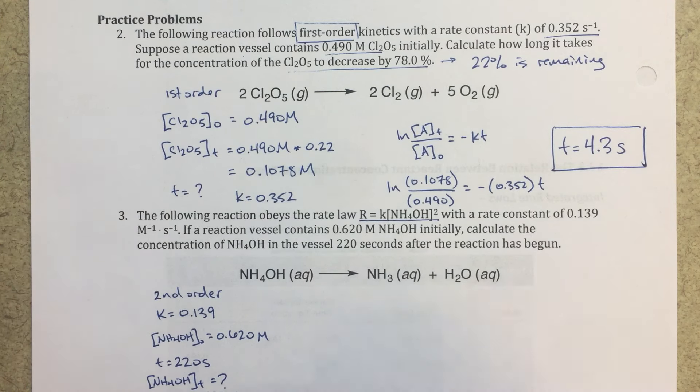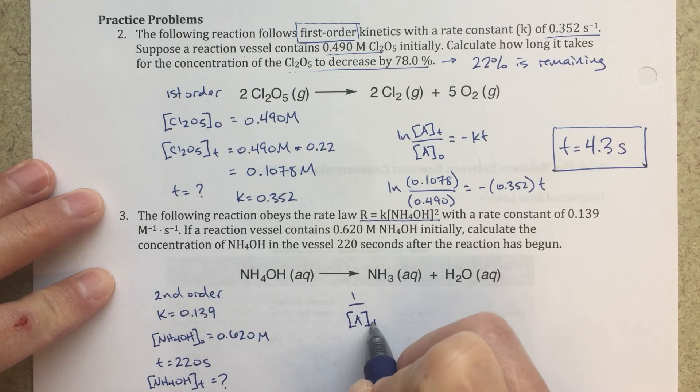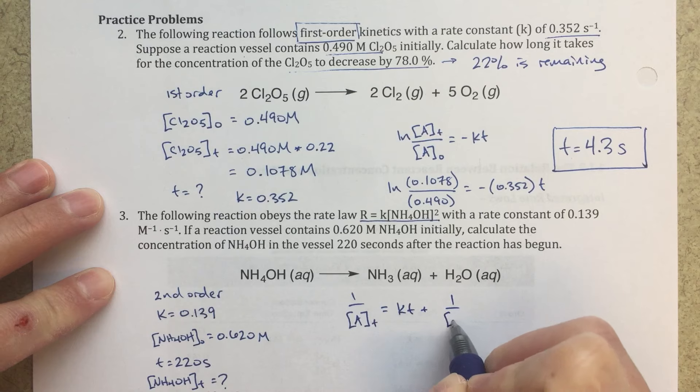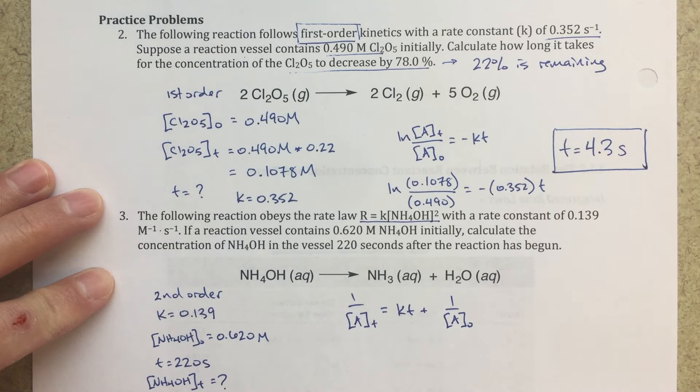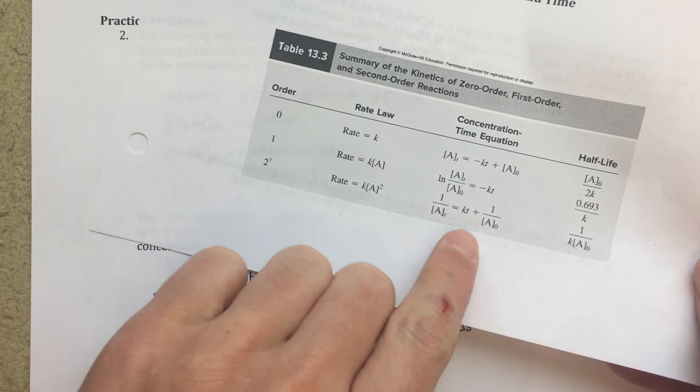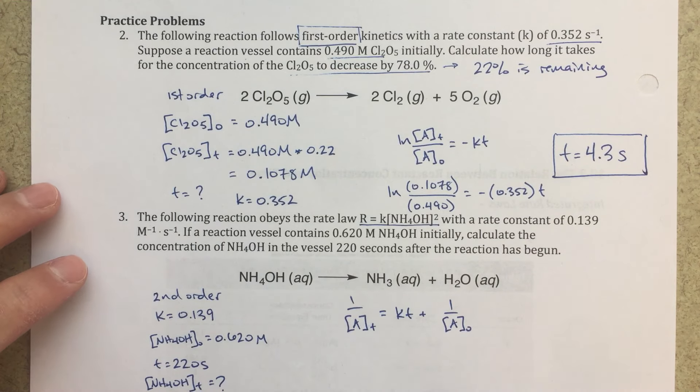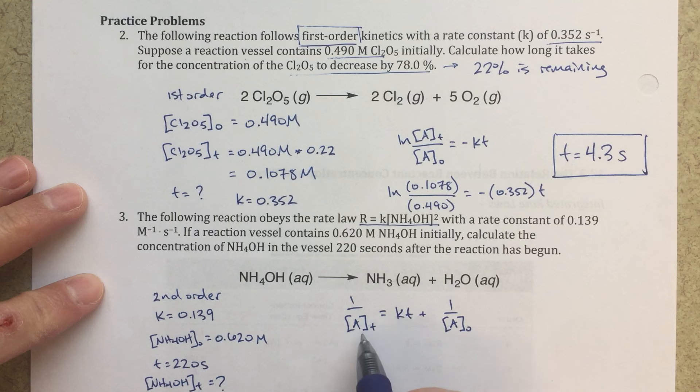So again, I've got three out of my four pieces of information. I know that it's a second order. So again, using my second order rate law, which is 1 over the concentration of A at time T equals KT plus 1 over the concentration of A initially. And again, I'm getting that from my table here for my second order reaction. This is my integrated rate law. So that's where I'm getting this equation here. And now I just plug everything in. So we're looking for this 1 over A at time T.